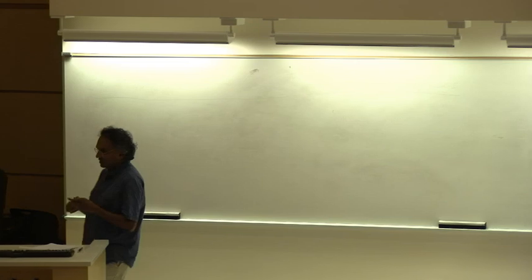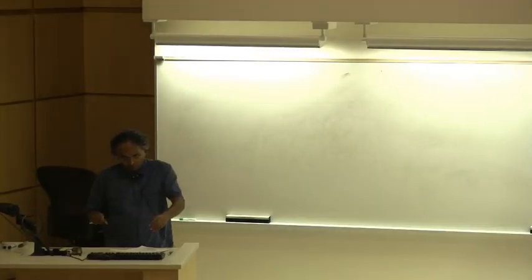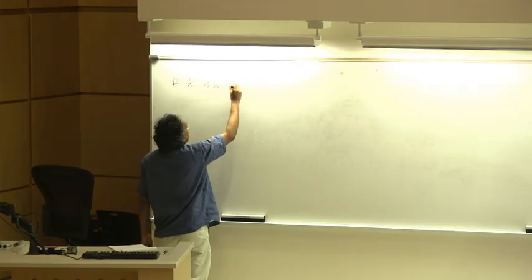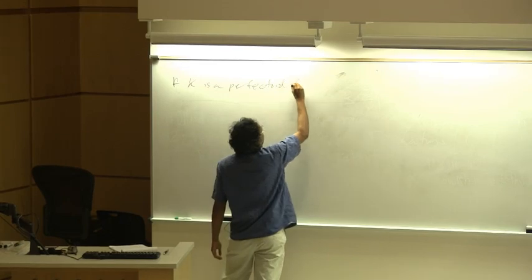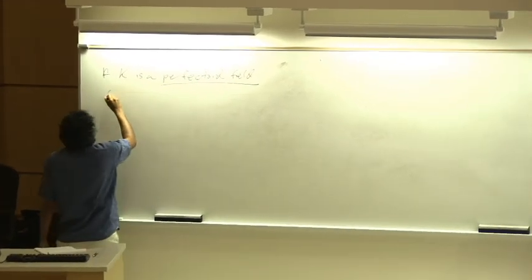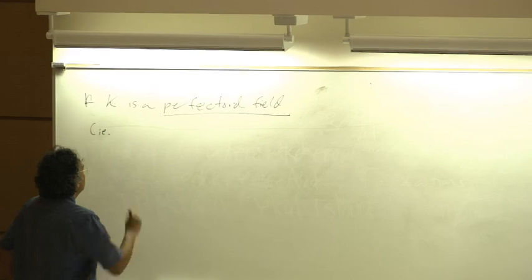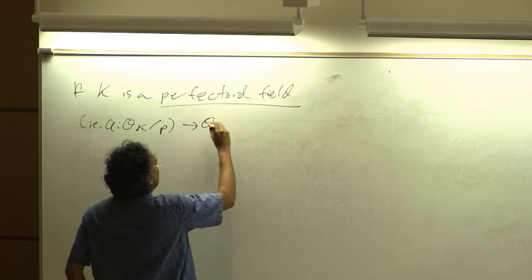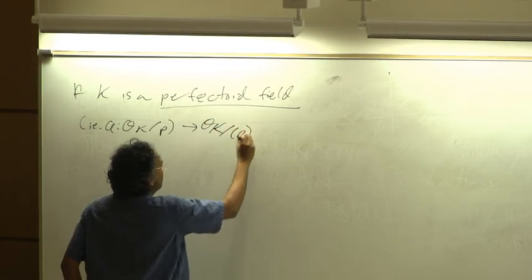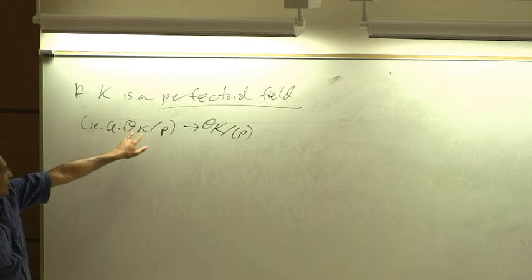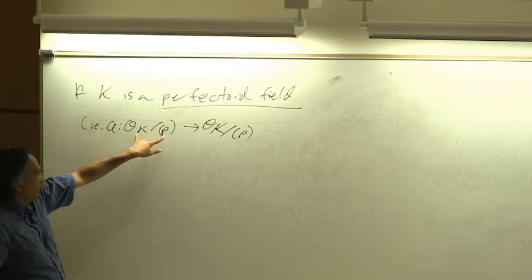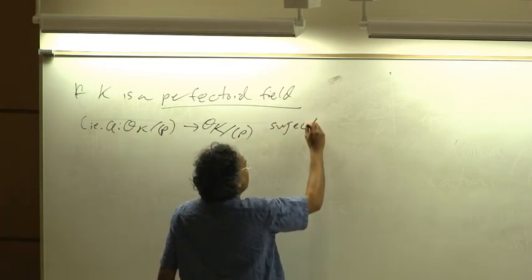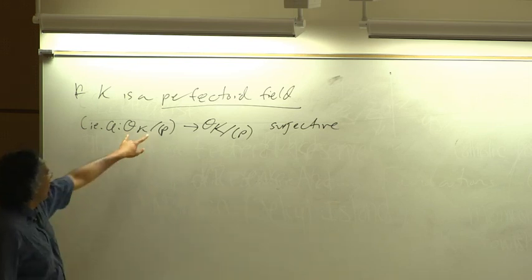There's one case in which that's easy, based on what we already know. If K is a perfectoid field — since I don't think that was defined, let me quickly state the definition — that means that if you take the valuation ring of K and divide by the ideal p, this is a ring of characteristic p so it has a Frobenius on it, and you want this to be surjective.